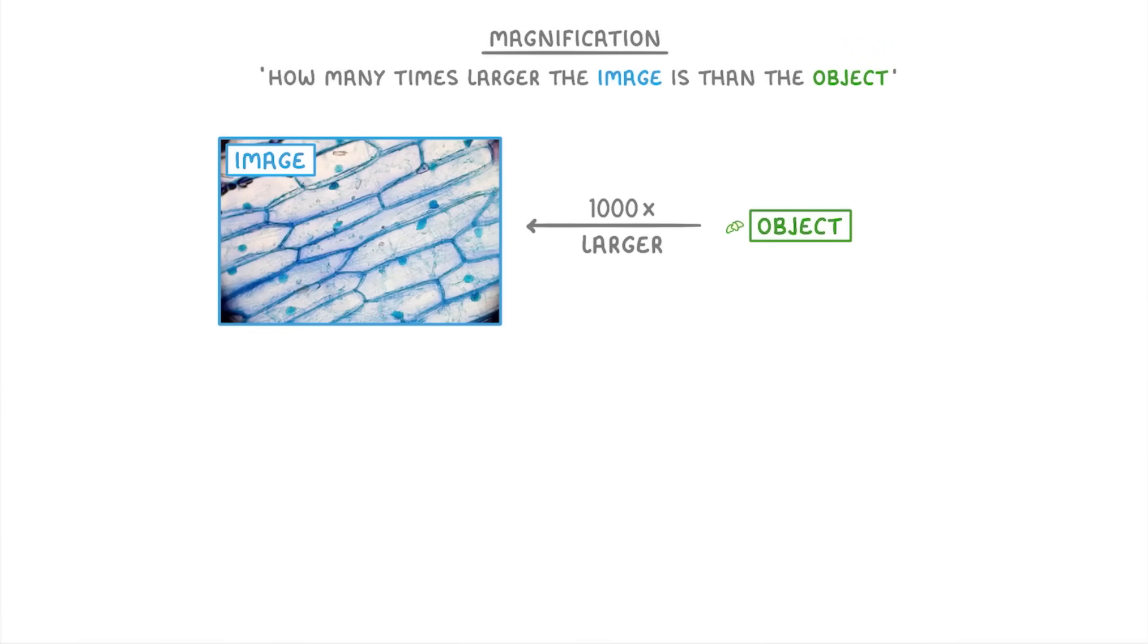This brings us nicely to our next term we need to know, magnification, which we can define as how many times larger the image is than the object. So if the image appeared one thousand times larger than the object then the magnification would be times one thousand.